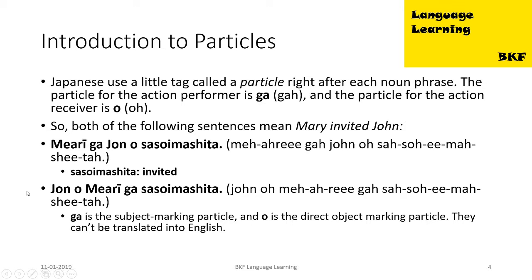Now let's see another example. 'John o Mary ga sasoimashita.' In this sentence we have exchanged the positions of Mary and John. We are first placing John, but again with John we are using the object action receiver particle, and again with Mary we are using the action performer particle. That is how we can tell that Mary is the one who is going to invite John.